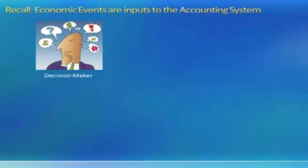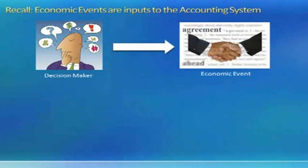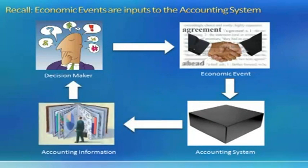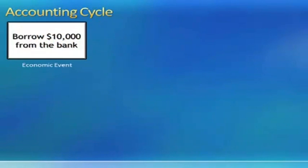Recall from prior modules that the accounting cycle starts with a decision maker engaging in an economic event. That economic event is captured by the accounting system, which then produces accounting information that is provided back to the decision makers. We are going to take a more careful look at what goes on inside the accounting system and how it captures economic events.